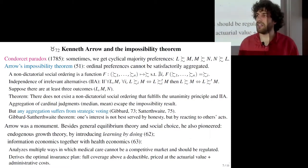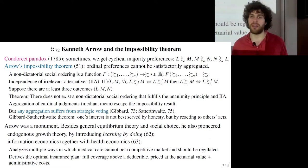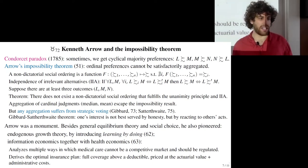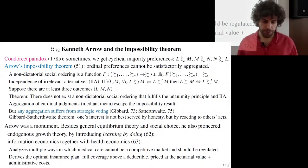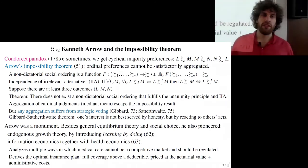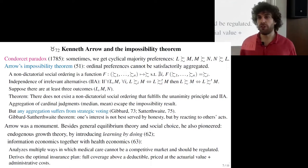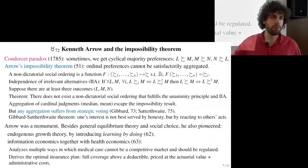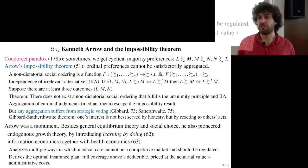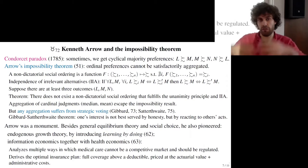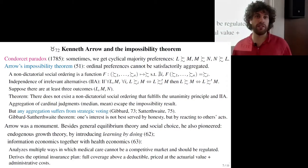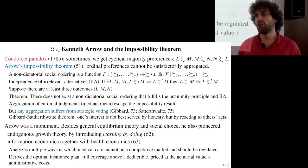Arrow also pioneered information economics in a brilliant paper that launched health economics. He analyzed in detail how the medical system cannot be understood with usual economic tools, because it cannot be a competitive sector for several reasons. One reason is externalities: when you get vaccinated, it helps not only you but others. So if vaccines protect mainly the elderly but carry a small risk for young people, it may not be in young people's individual interest to vaccinate, even though it serves collective welfare.